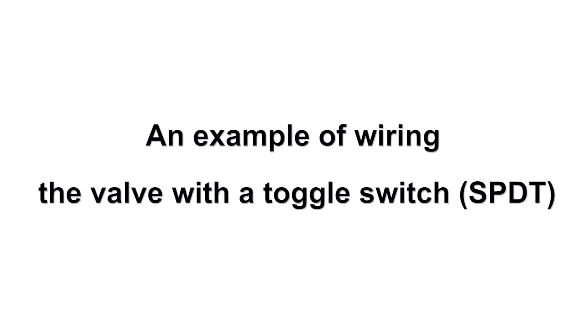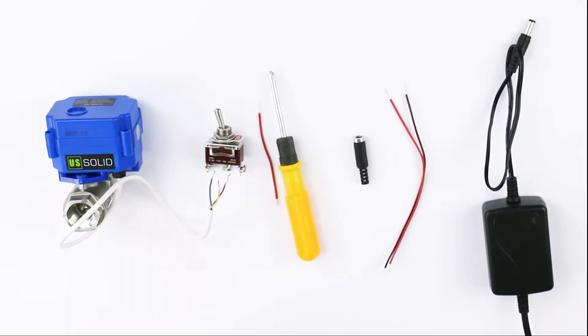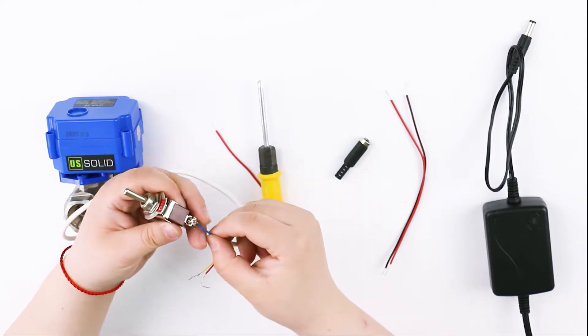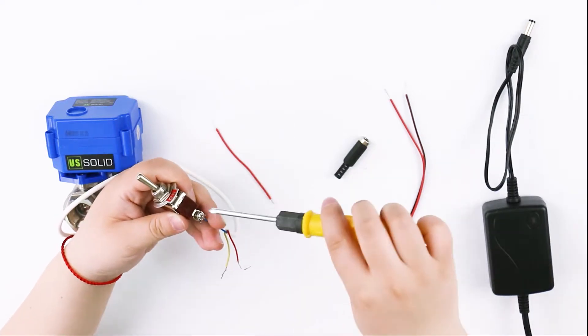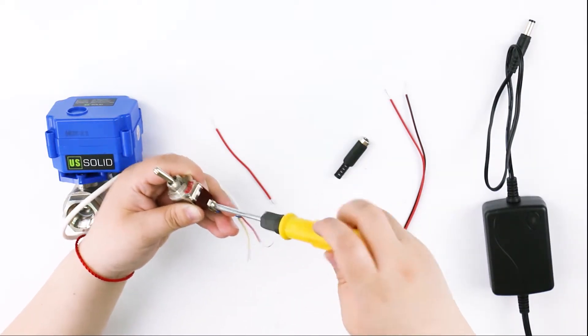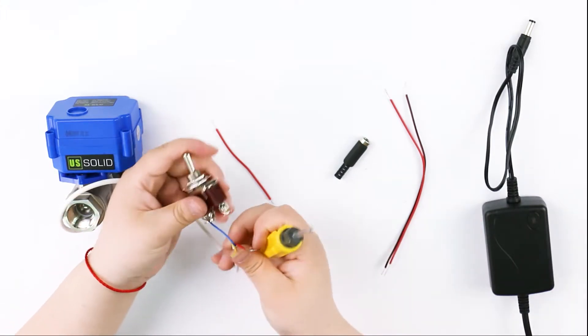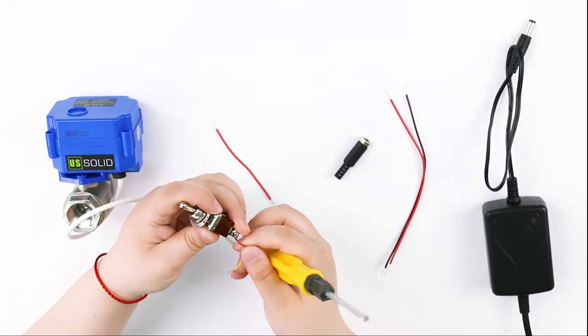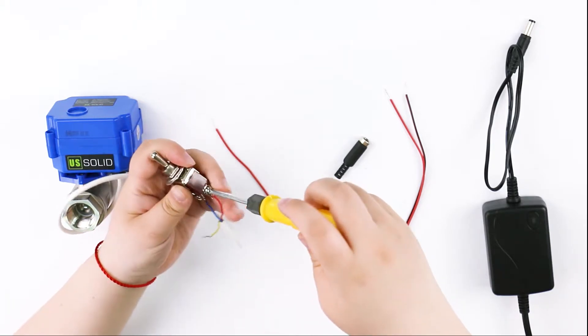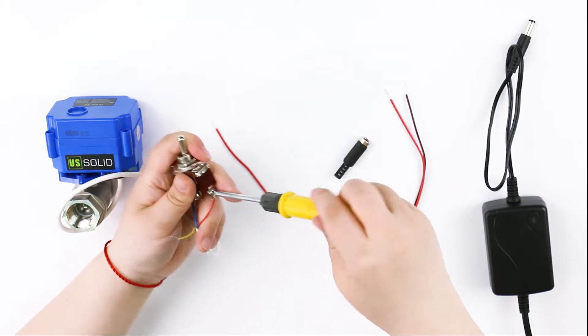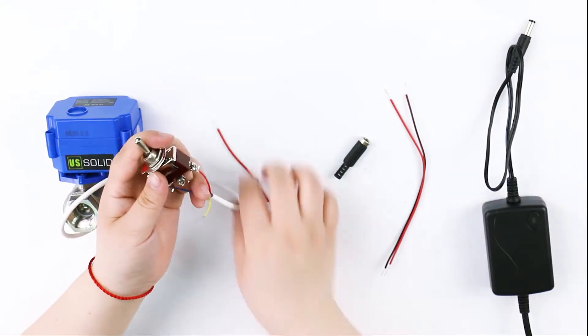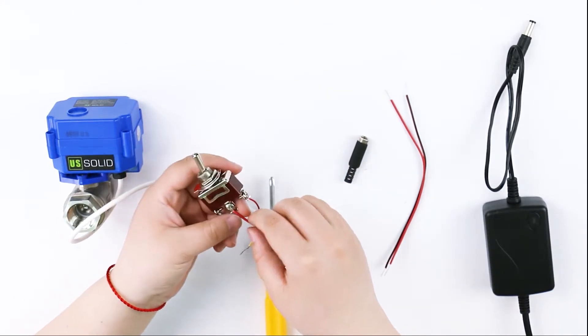We will show you an example of wiring the valve with a toggle switch. The two ends of the switch are connected with red and blue wires respectively, and the middle position will be connected with the positive pole of the power supply.